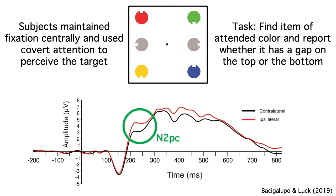As usual, we saw an N2PC component in the conventional ERP analysis. The voltage was more negative contralateral to the target from approximately 200 to 300 milliseconds.